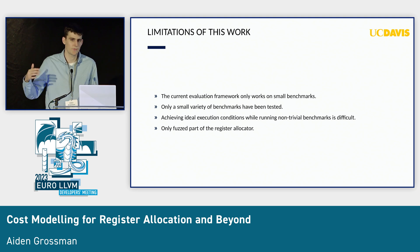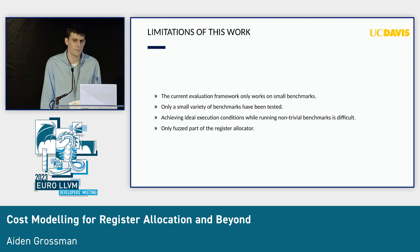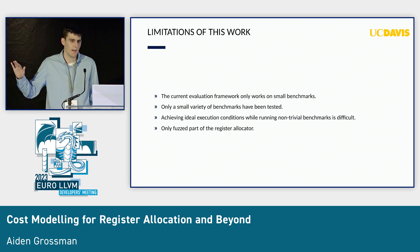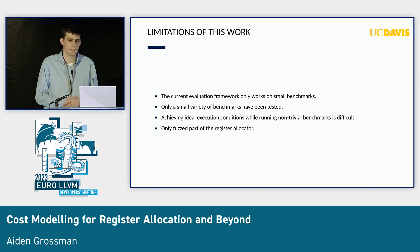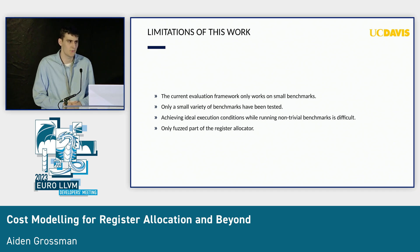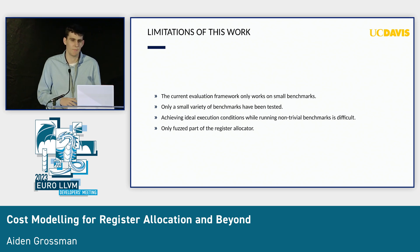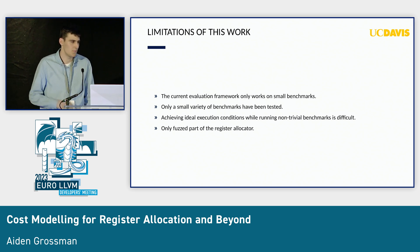Limitations of this work and some future directions: right now we've only focused on small annotated single-source benchmarks, and that does not represent real-world code, so we're looking at extending that to broader, bigger, real-world apps. Even achieving ideal execution conditions is hard — one executable I was looking at had high standard deviation because it would sometimes run into a bunch of front-end stalls for reasons I still haven't determined. Getting really good ground truth data is hard, and we also only fuzz part of the register allocator.